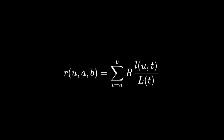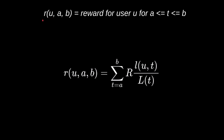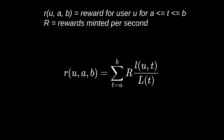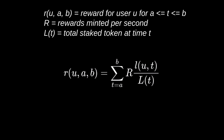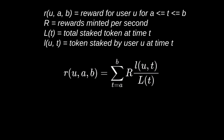The amount of rewards a staker will receive over a time period from A to B is given by this equation. R_UAB is the reward for user U for the time between A and B. R is the fixed reward minted per second. L(T) gives the total staked tokens at time T, and l(U, T) is the total staked by user U at time T. Given this definition, let's see how we can derive this equation.